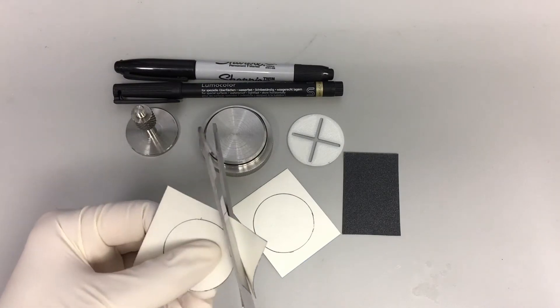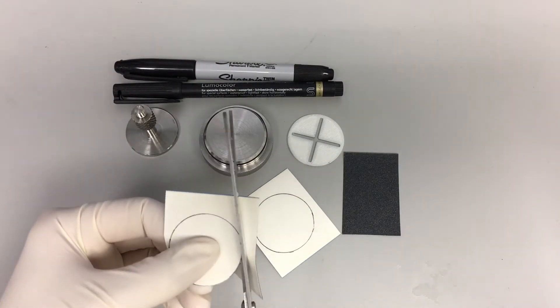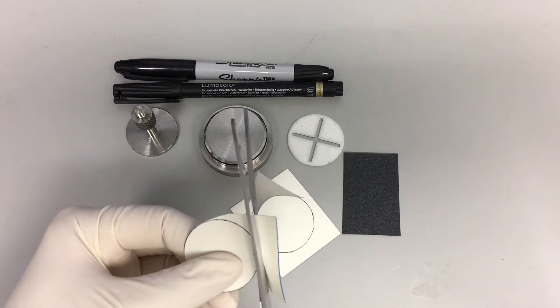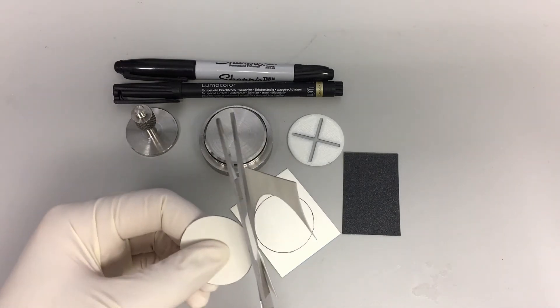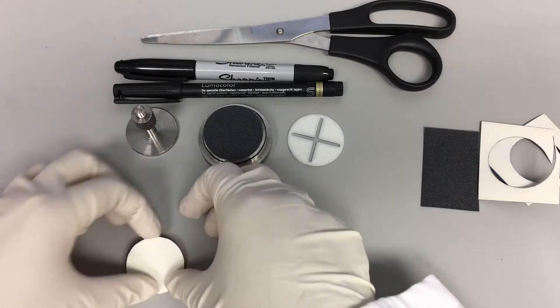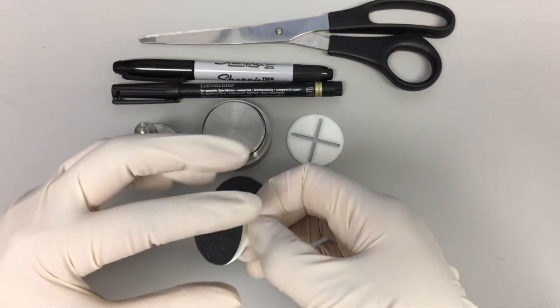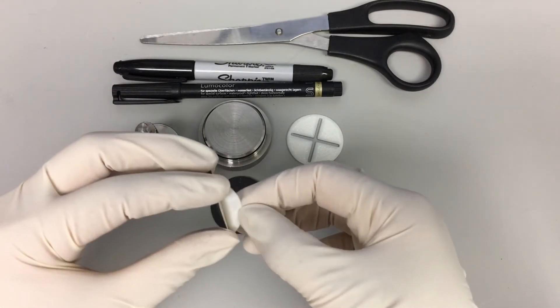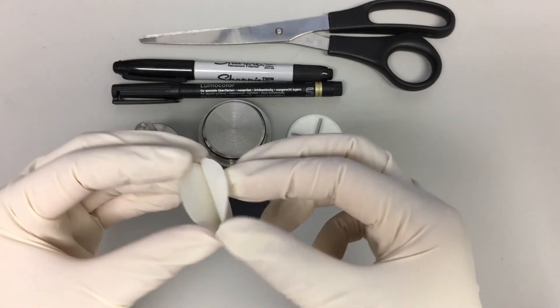Cut two pieces of adhesive sandpaper to cover the entire surface of the indenter and the sample holder. Peel off the protective paper from the back side of the sandpaper to expose the adhesive surface.